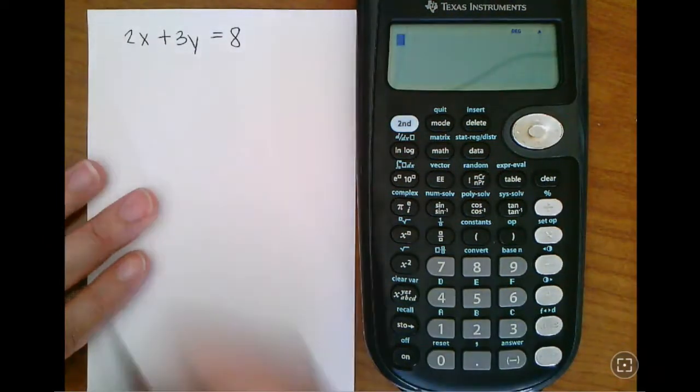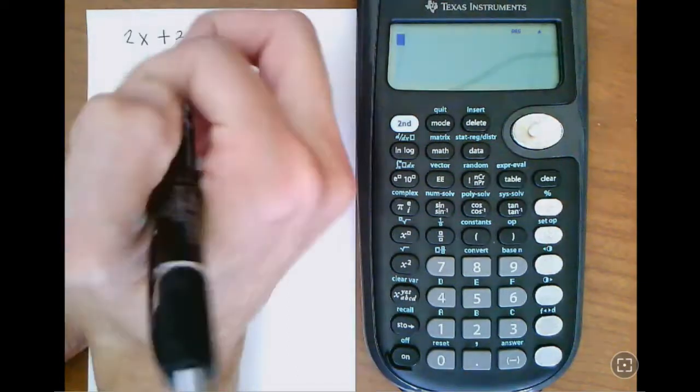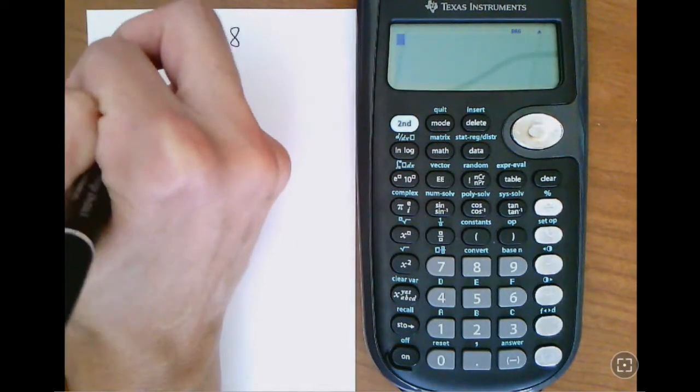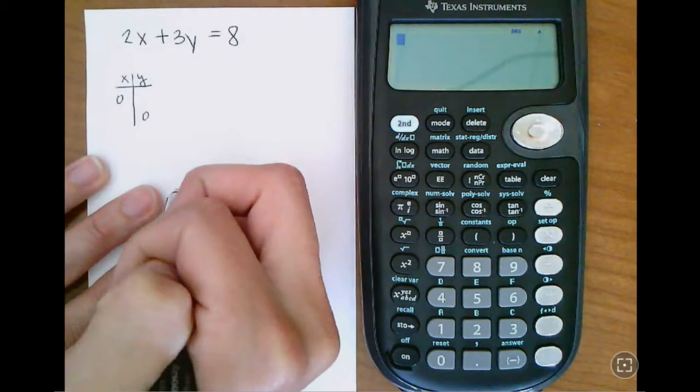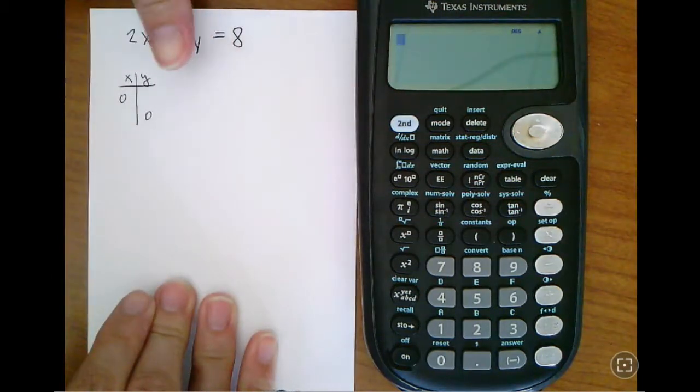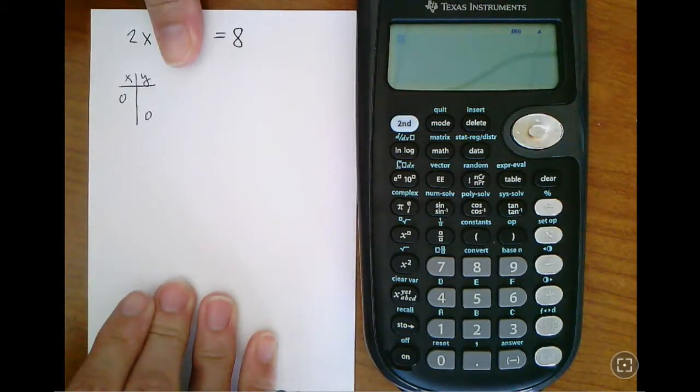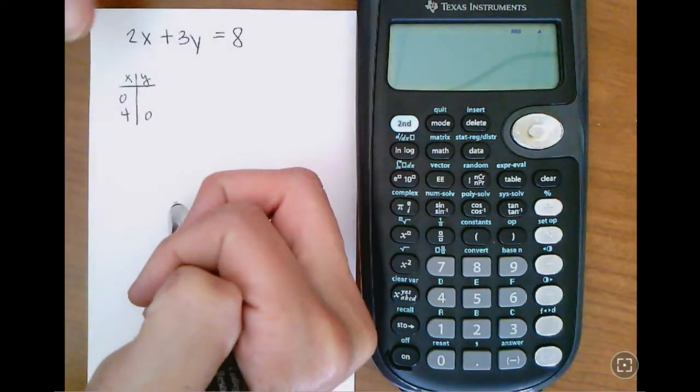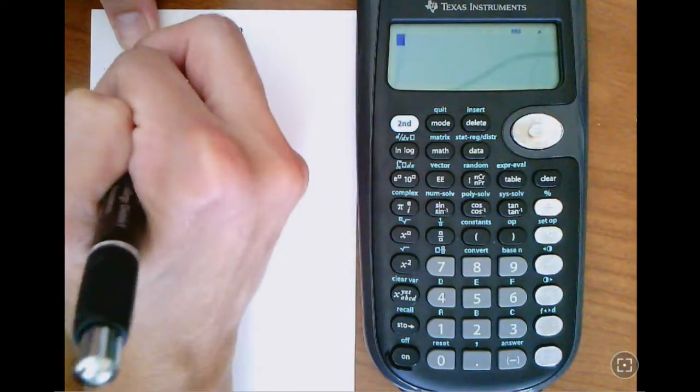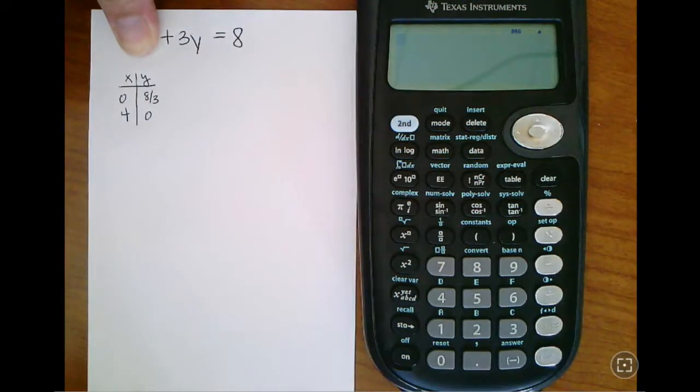One method we have for creating an easy table is to use the intercepts, so x is 0, y is 0. Not going to be terrible for y is 0 - we get 2x equals 8, so x must be 4. But kind of gross if we make this 0 because we end up with 8 over 3, a fraction. So it could be an issue.